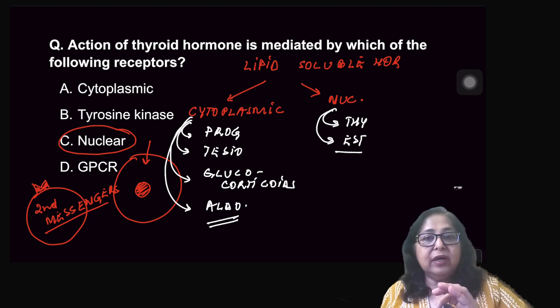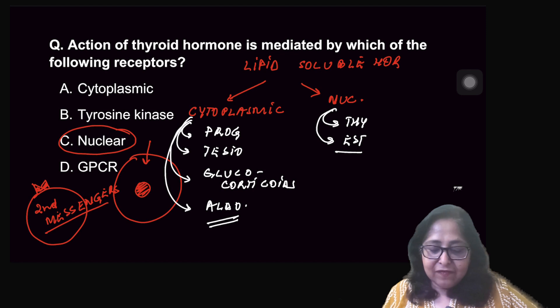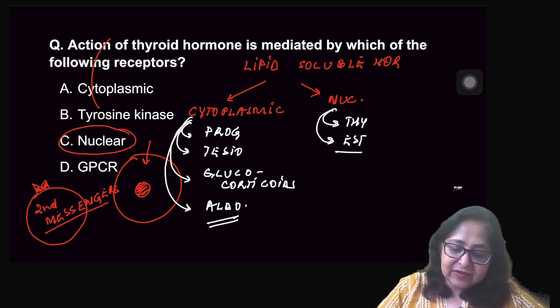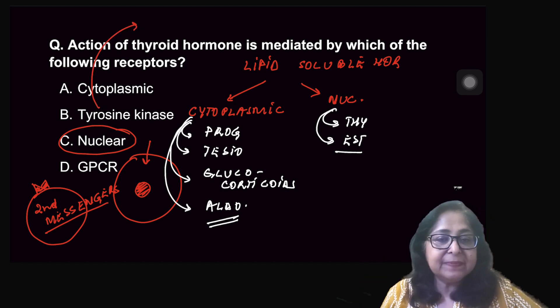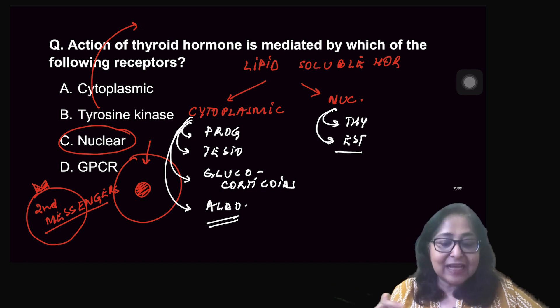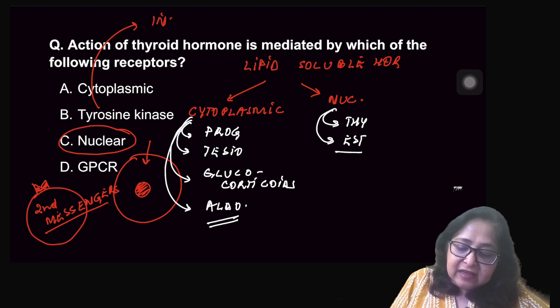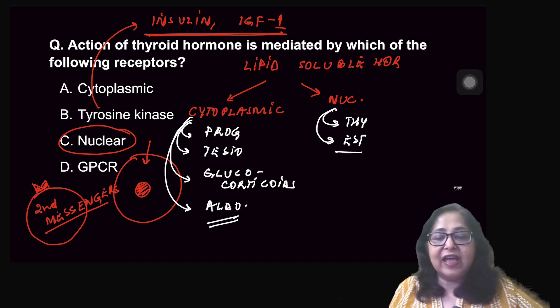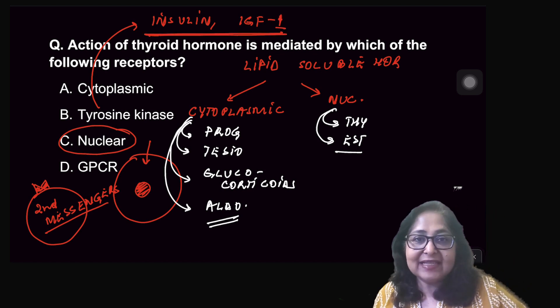Two hormones whose receptor itself has tyrosine kinase activity. These are two water-soluble hormones which do not require second messenger because the receptor itself has tyrosine kinase activity. This is insulin and IGF-1. The receptor itself has tyrosine kinase activity.